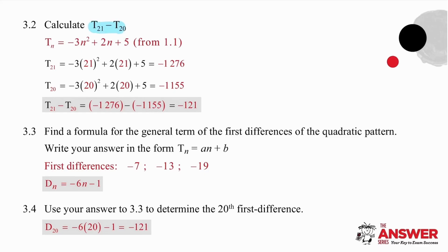To work out T21 minus T20 is simply substitution. So, you can do that in one go on your calculator or you can show your steps. So, to get the 21st term, you substitute 21. To get the 20th term, you substitute 20. Subtract the results and the difference between those terms is minus 121.